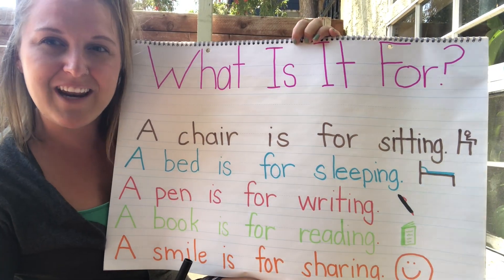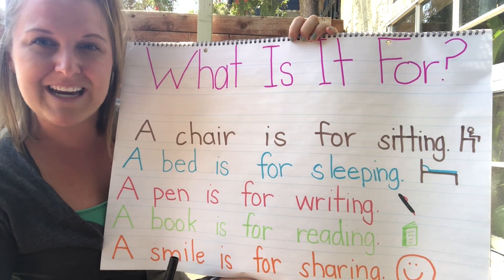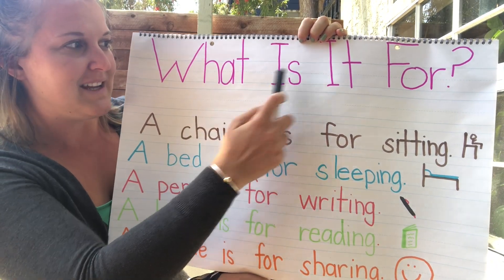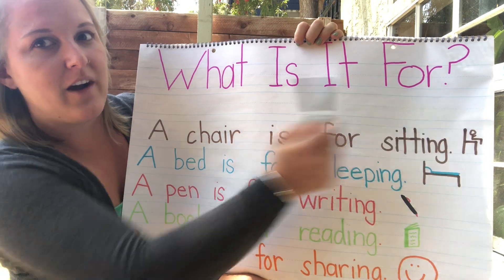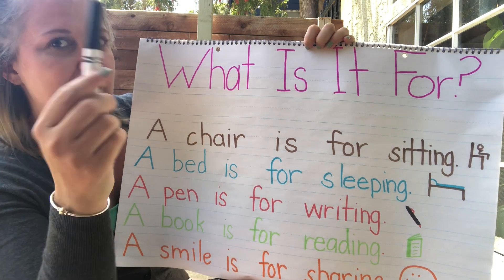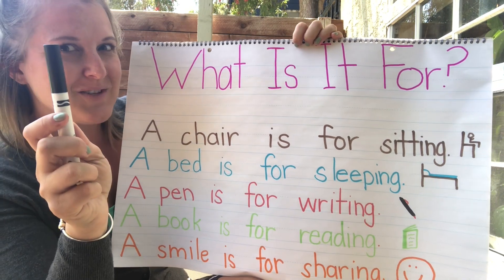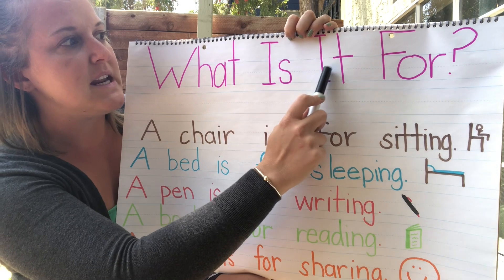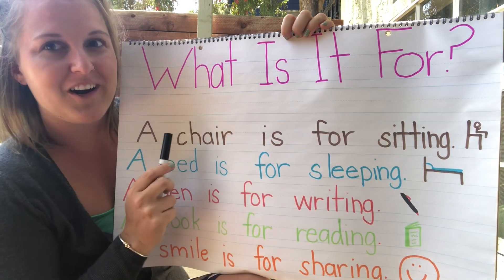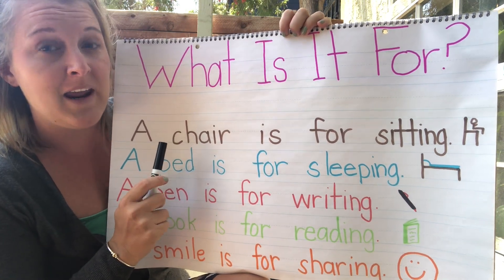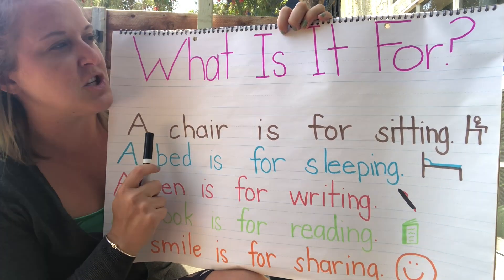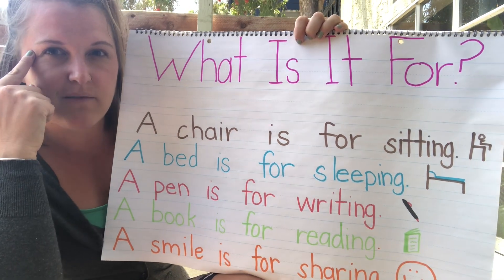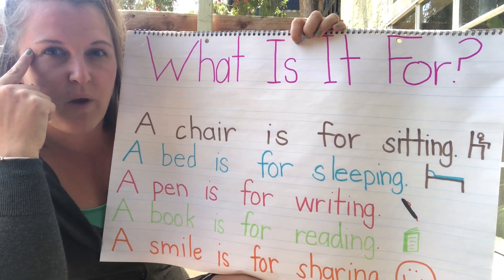Let's try reading this fluency together. We can't forget to use our finger or a pointer to point to each of the words. That's called tracking. We need to make sure that we track the words so our brains can remember what they are.